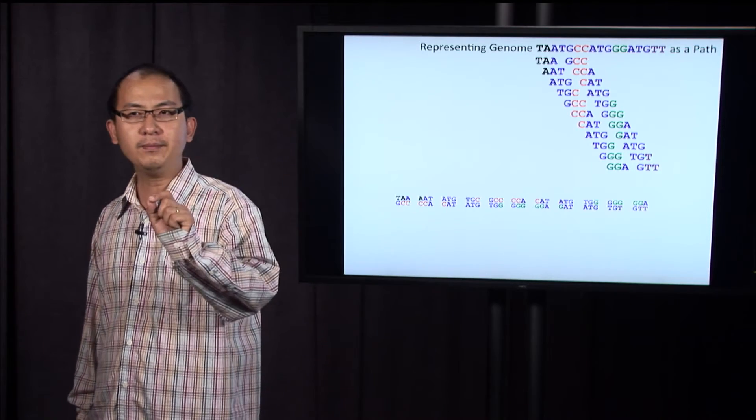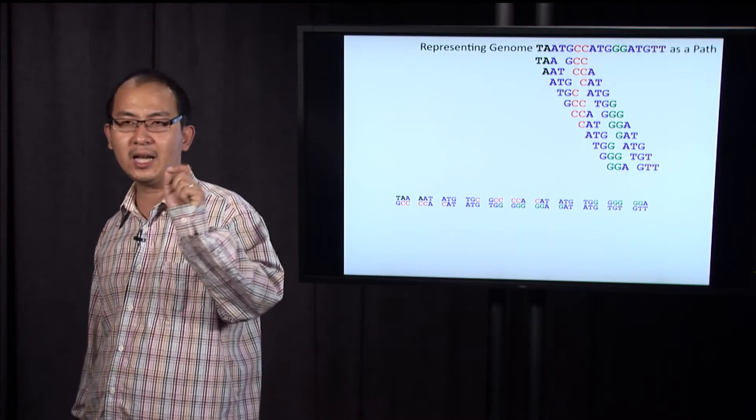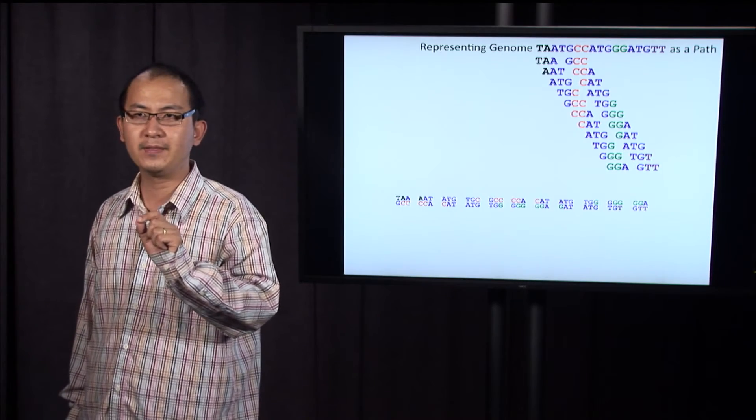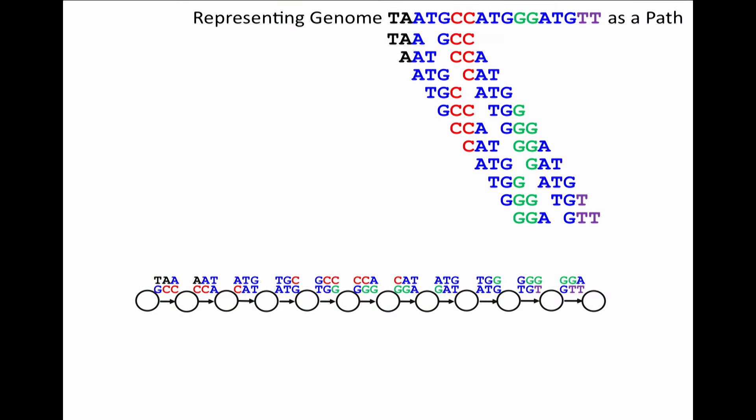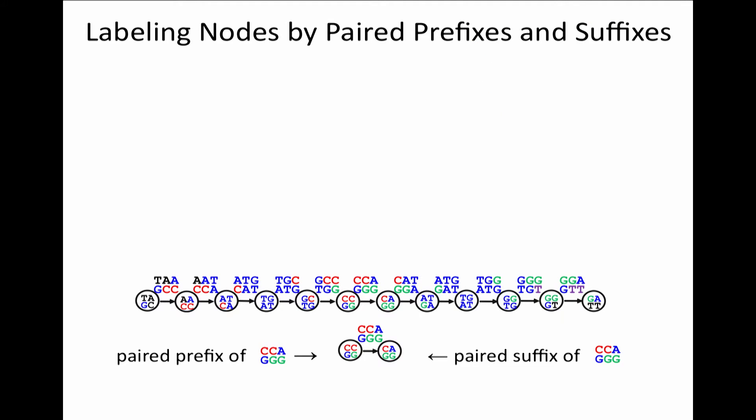Given a genome and its paired k-mer composition, it's clear that the genome can be represented as a path where the edges are labeled by paired k-mers and the nodes can be labeled by pairs of k-1-mers. And this path, we call it genome path.